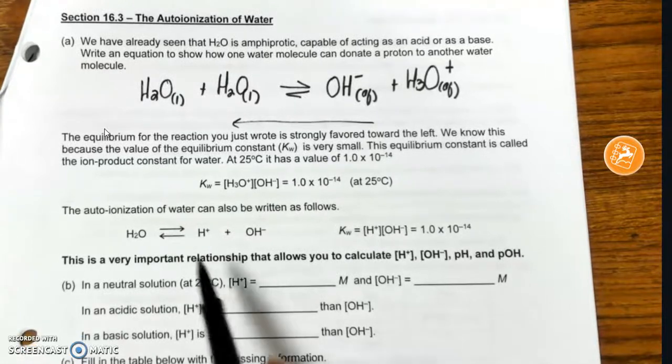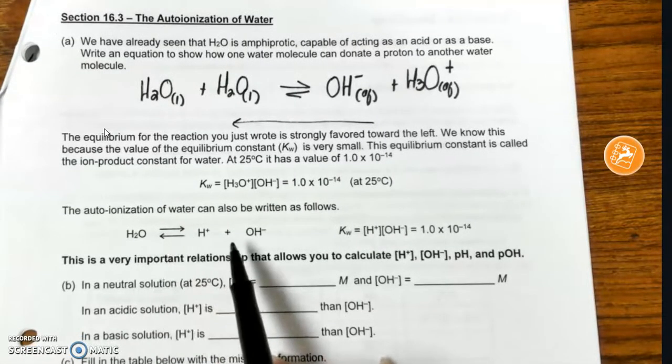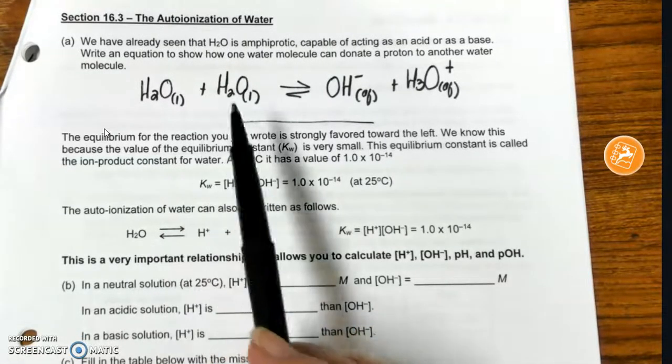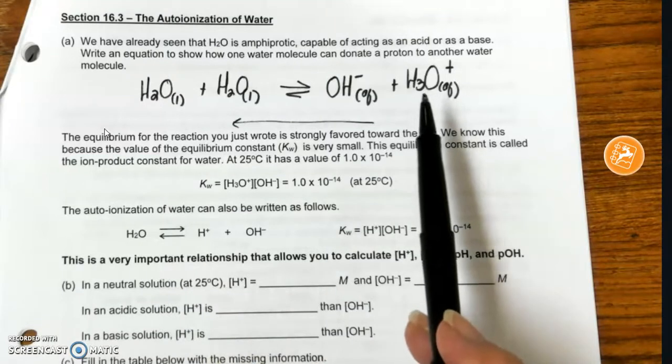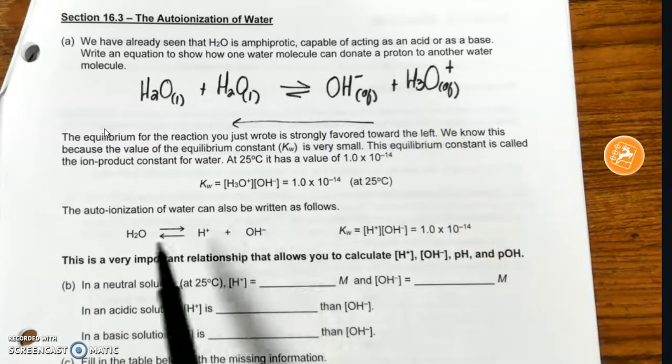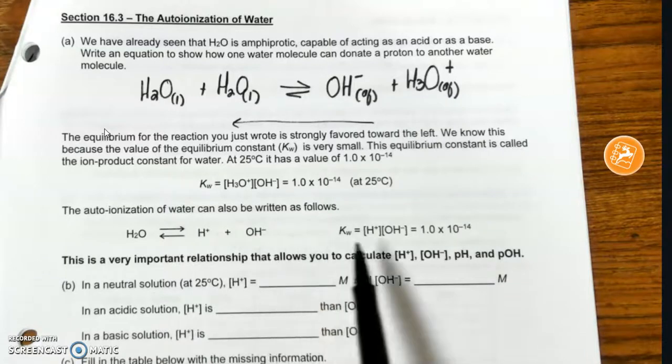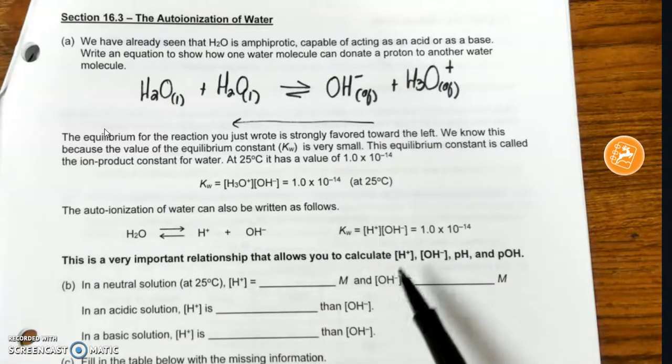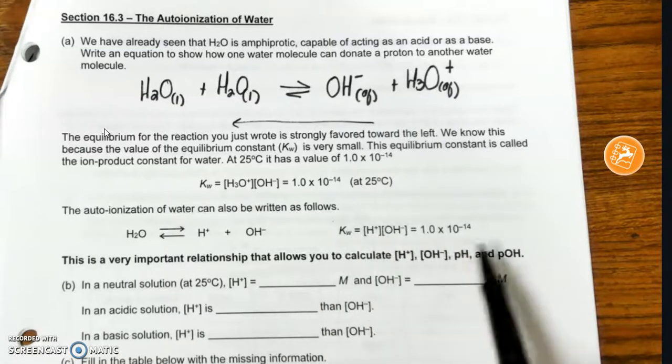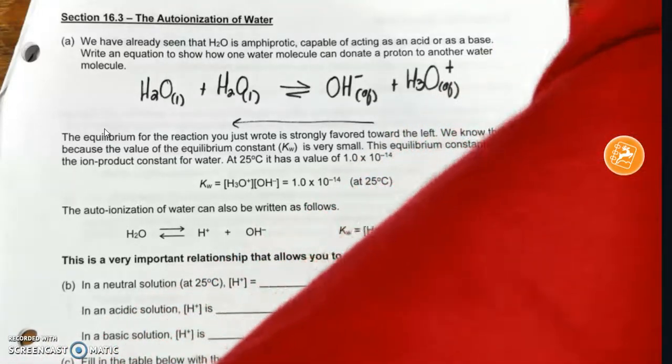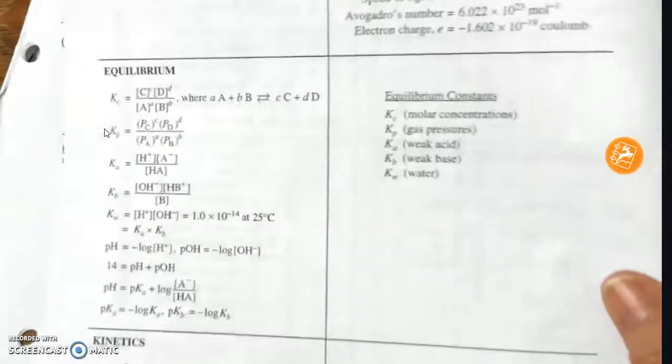Now, the autoionization of water can also be written in this way. I can just look at one and not use the hydronium ion. Instead, just look at it as a dissociation. And again, I still get, and this tends to be what you'll see. In fact, if you look at your formula chart, let's do that real quick.